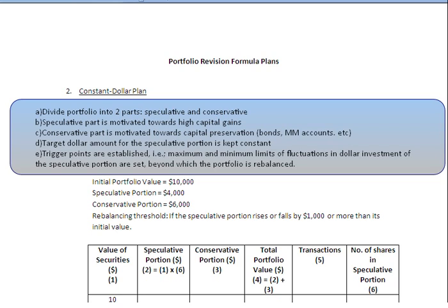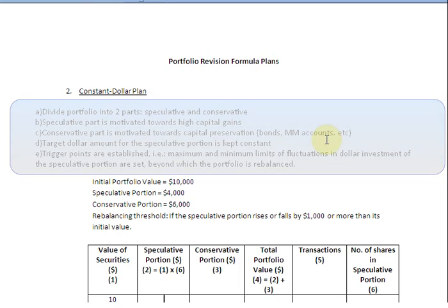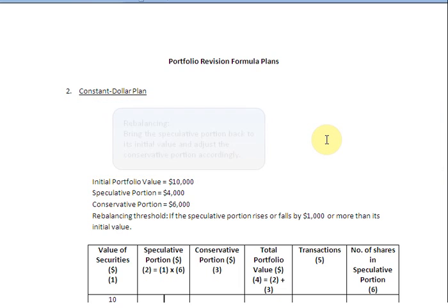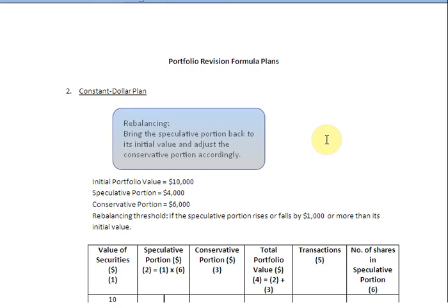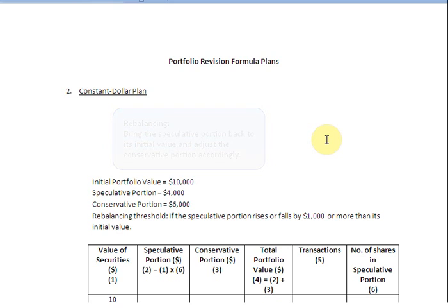You might wonder how do we rebalance the portfolio. It is pretty simple. What we do is bring the speculative portion back to its initial value — the value from where we started — and adjust the conservative portion accordingly. If the value of securities rises in the speculative portion, we skim off the profits by selling securities and add the funds to the conservative portion. And we do the opposite if the value falls — we buy securities by withdrawing funds from the conservative portion.